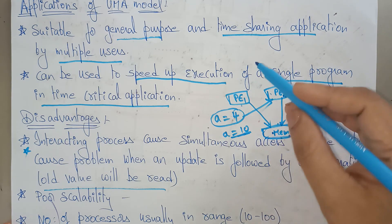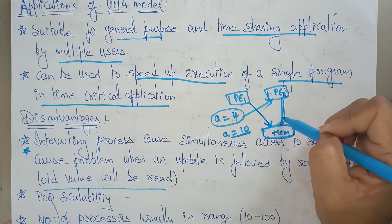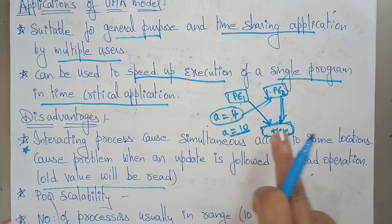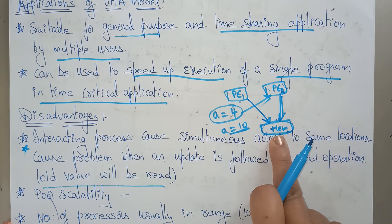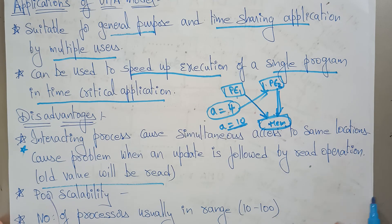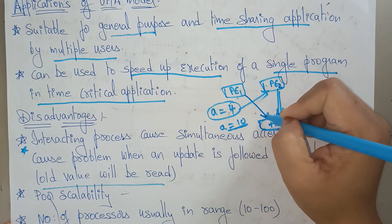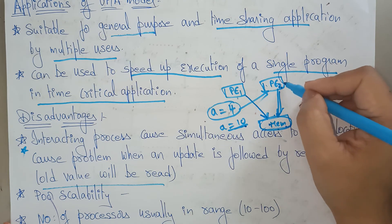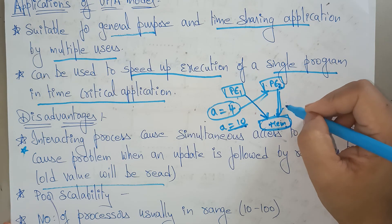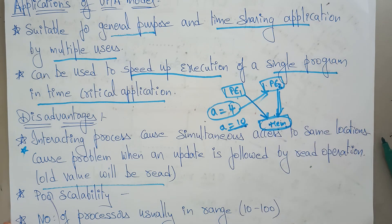Interacting processes cause simultaneous access to the same location. The problem occurs when an update is followed by a read operation: P1 tries to read, then wants to update. Before P1 updates, P2 already takes the old value. After P2 takes the value, P1 updates — so P2 has stale data. This is one of the disadvantages.